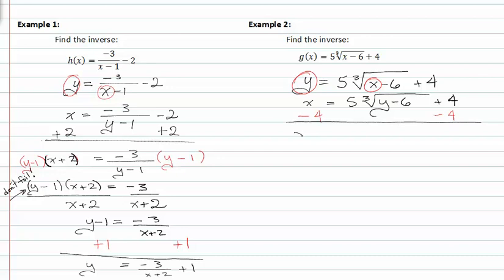So I get x minus four is equal to five cubed root of y minus six, and then I can divide both sides by five. This gives me x minus four over five is equal to the cube root of y minus six.